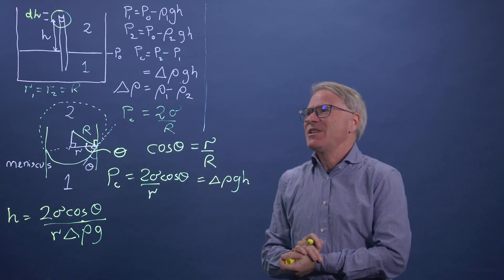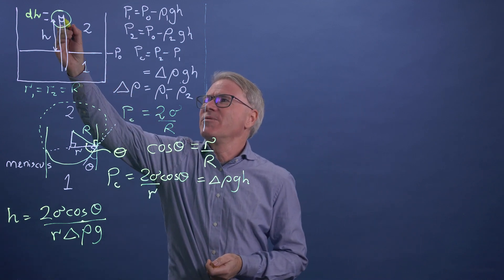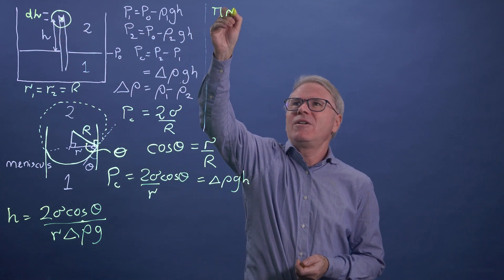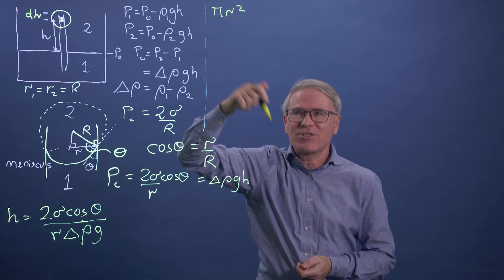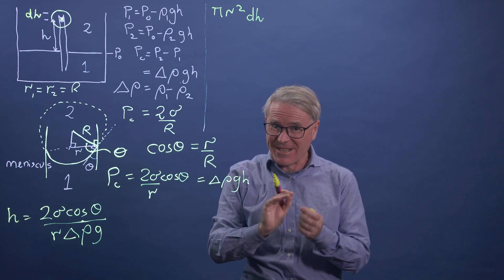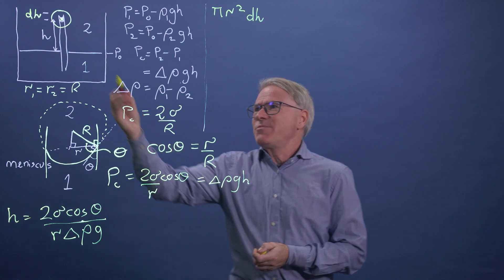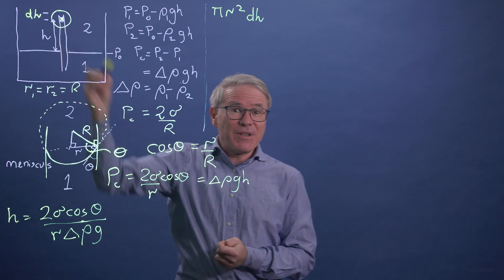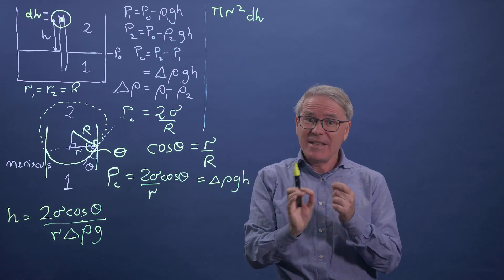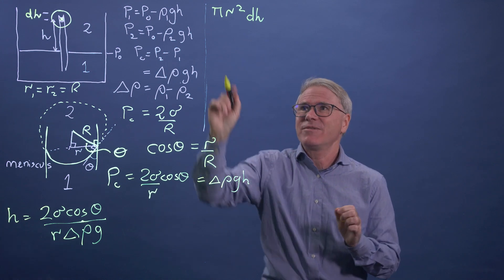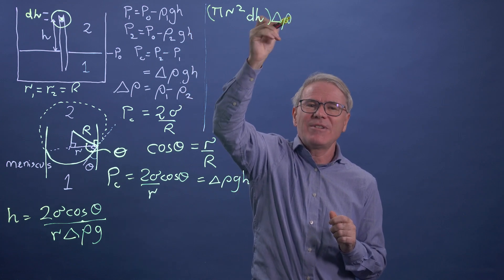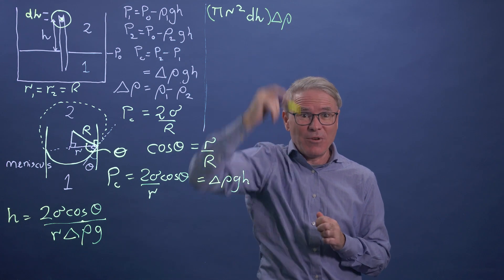So consider that the meniscus moves up just a small amount dh and we're going to find the equilibrium between surface energy and potential energy. Well, this little collar of fluid here has a volume pi r squared. That's the cross section of a circle times dh. That's the volume. That's not the mass. What we've done is we've introduced phase one and we've displaced phase two. So the change in mass for this volume is actually given by the difference in densities. So that's a volume times a density, which is a mass per unit volume. That's a mass.